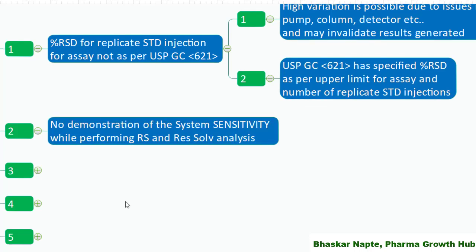No demonstration of system sensitivity while performing related substances and residual solvents analysis. These two tests quantify trace-level impurities or components, but do you have any injections confirming that your HPLC or gas chromatography system is sensitive enough to quantify those contents at the required sensitivity level? If such injections are absent, you need to include a solution that confirms system sensitivity — for example, injecting a sample solution at the detection level or quantification level and measuring the signal-to-noise ratio to justify adequate sensitivity.